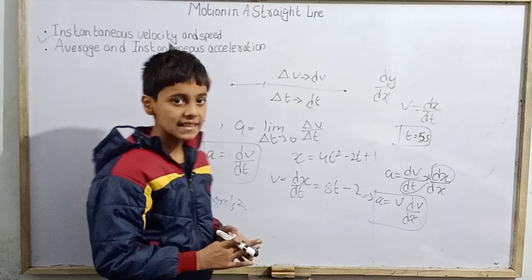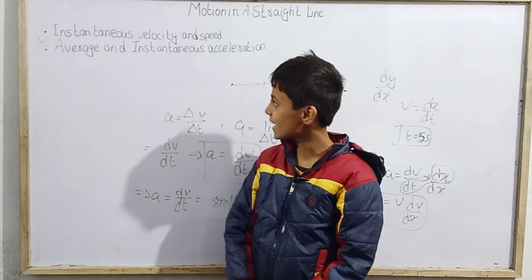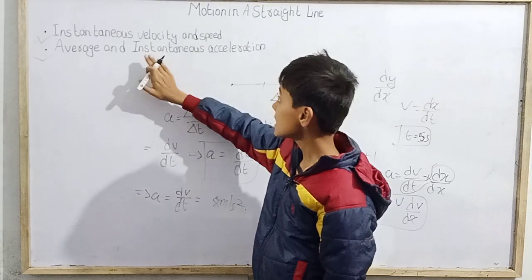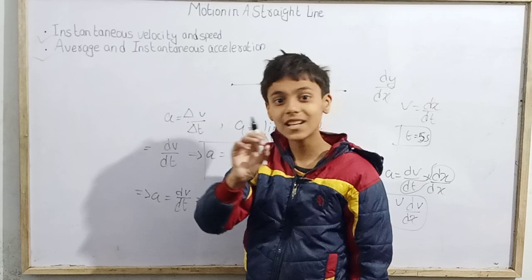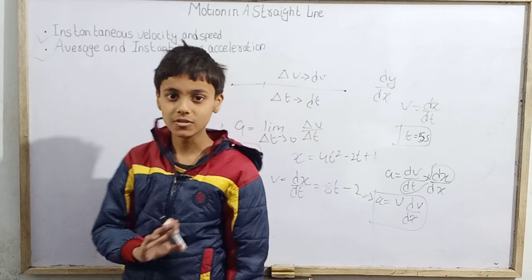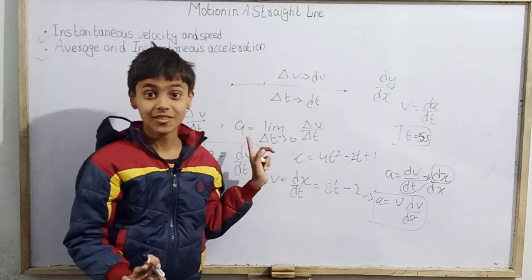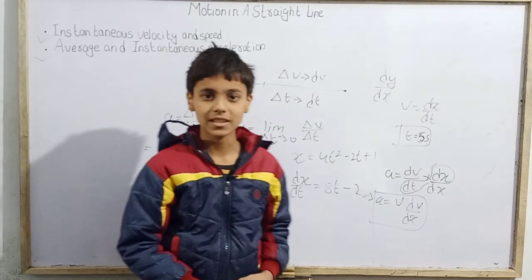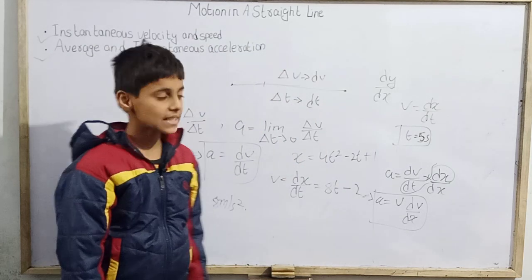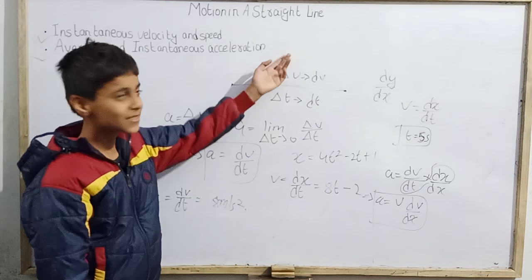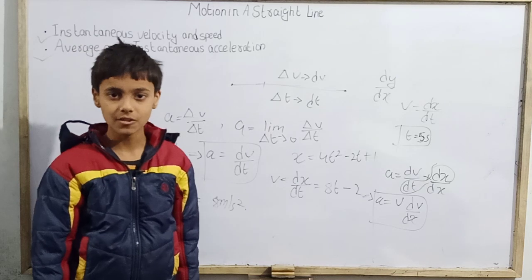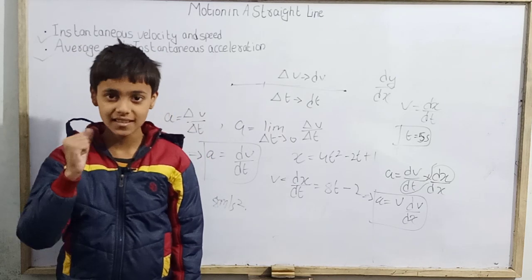So instantaneous velocity and speed, and average and instantaneous acceleration are covered. Remember: acceleration is the rate of change of velocity — never rate of change of speed. Acceleration is always a vector quantity. This was today's topic on kinematics — motion in a straight line — for JEE and general Class 11 syllabus from Chapter 3 of NCERT. Thank you, Jai Hind, Jai Bharat.